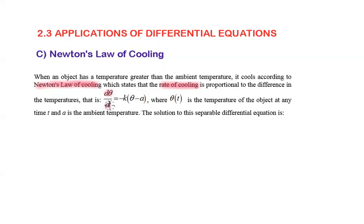That is, dθ/dt equals negative k times (θ minus a), where θ(t) is the temperature of the object at any time t and a is the ambient temperature or surrounding temperature.